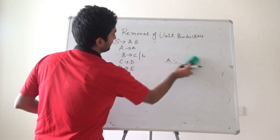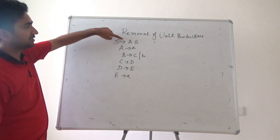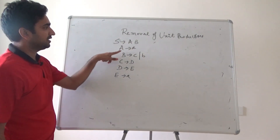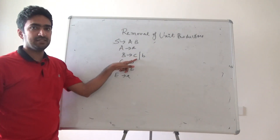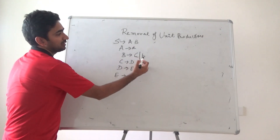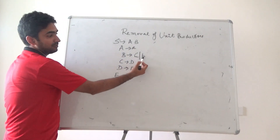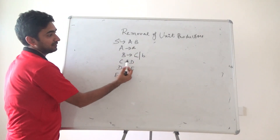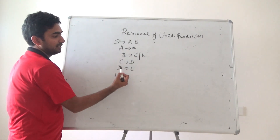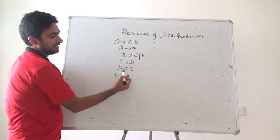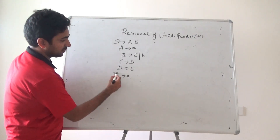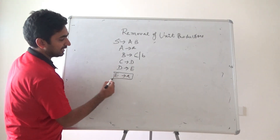The question given is: S is generating AB, A is generating small a, D is generating Cb. B is generating C, C is generating D, D is generating E, and E is generating small a. So E is the one which is ultimately generating the terminal a.